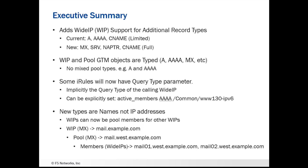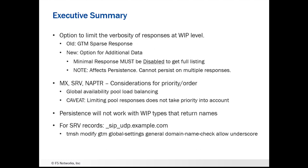That means pool members for a particular wide IP can now contain names of other wide IPs on the BigIP. In the example here, we have a wide IP that's an MX record type called mail.example.com. Within its pool — which is also typed as MX — the pool is mail.west.example.com, and the members of that pool are actually the wide IPs mail01 and mail02 for west.example.com. So you can have multiple resolutions happen within one query to a wide IP, because wide IPs can actually be members of pools.